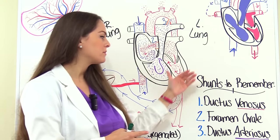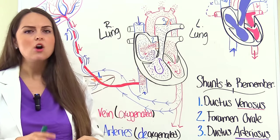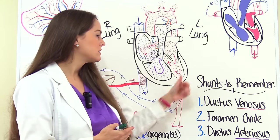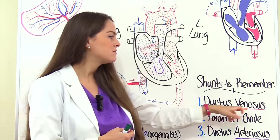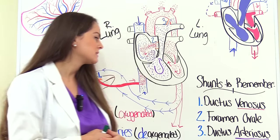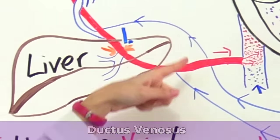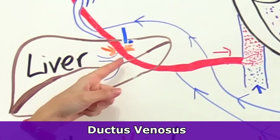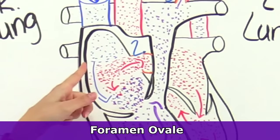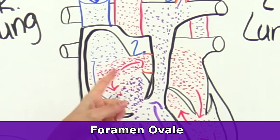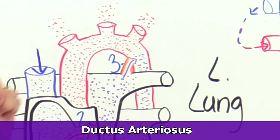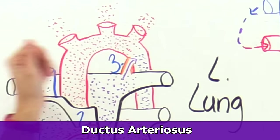For exams, you want to remember the names of these shunts, where they're located, and how blood flows through them. The shunts to remember are the ductus venosus, the foramen ovale, and the ductus arteriosus. The ductus venosus is located near the liver. The foramen ovale is located between the right atrium and the left atrium. And the ductus arteriosus connects the pulmonary artery to the aorta.